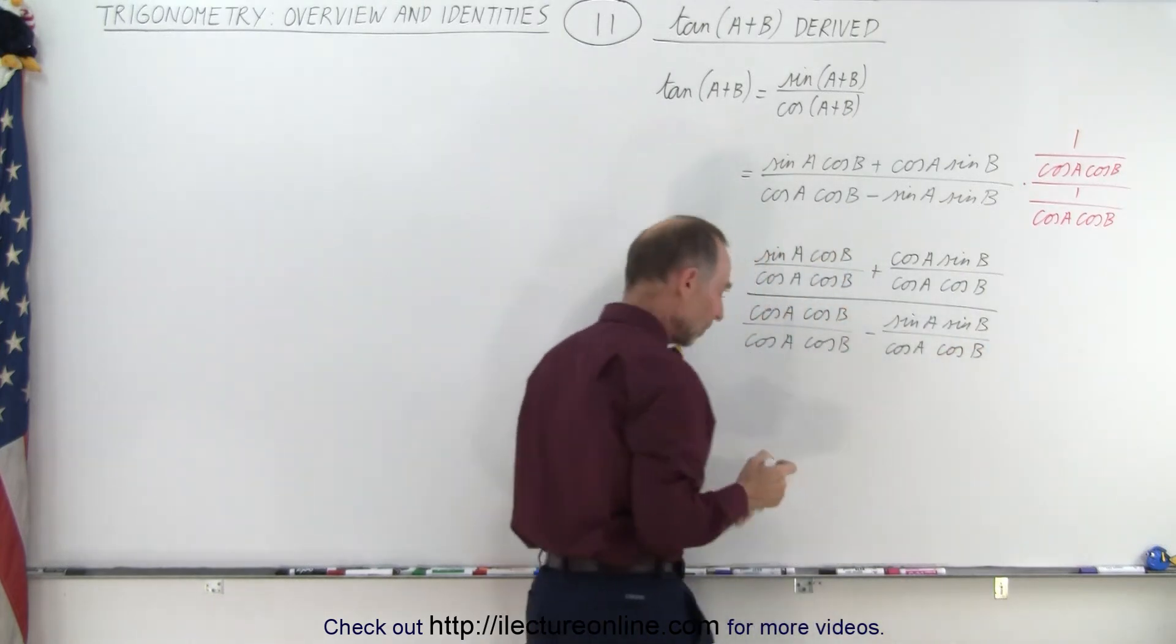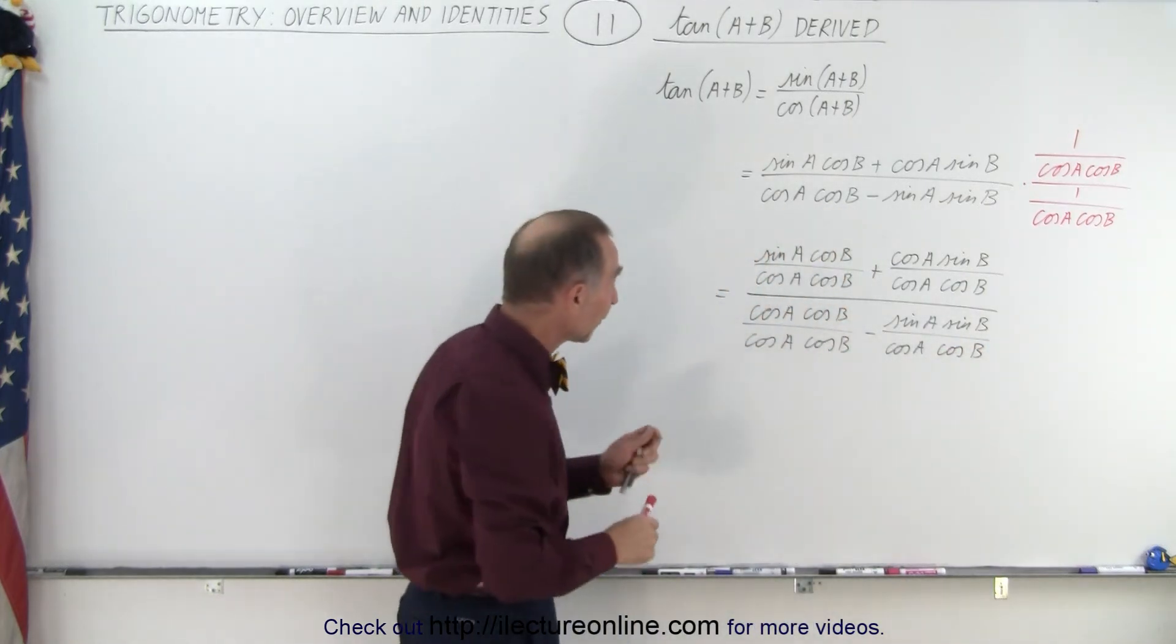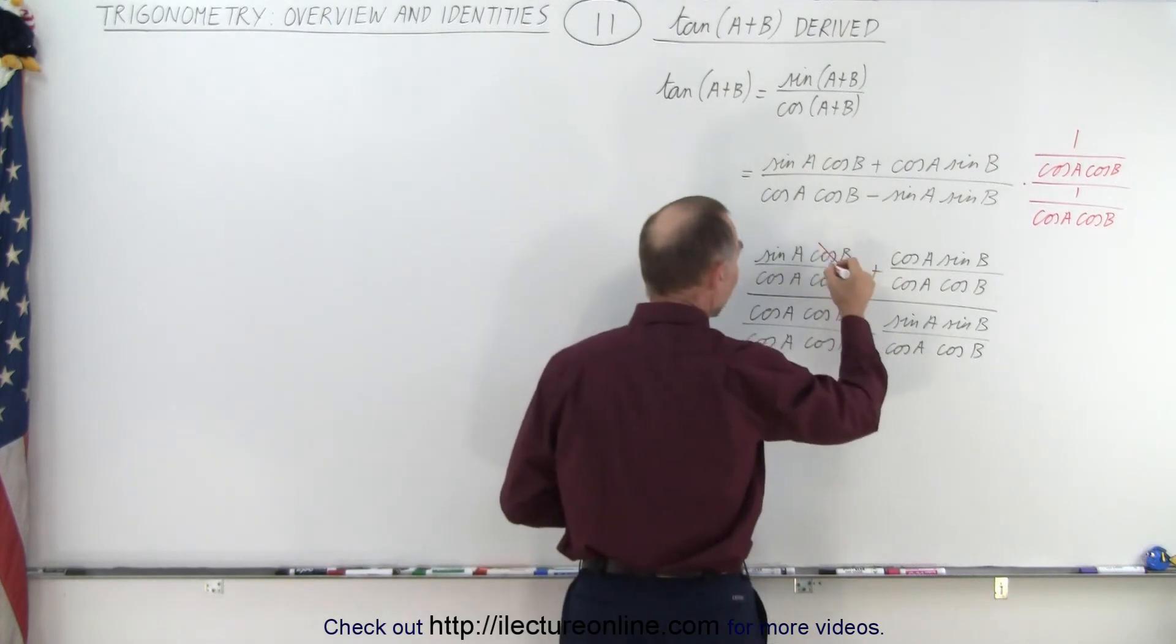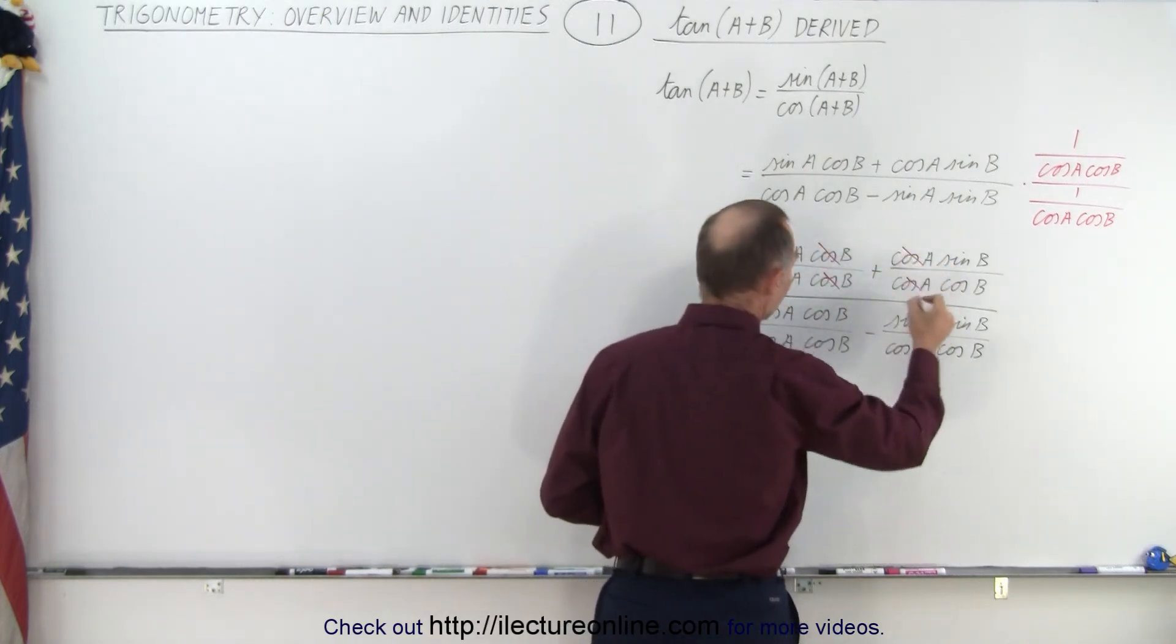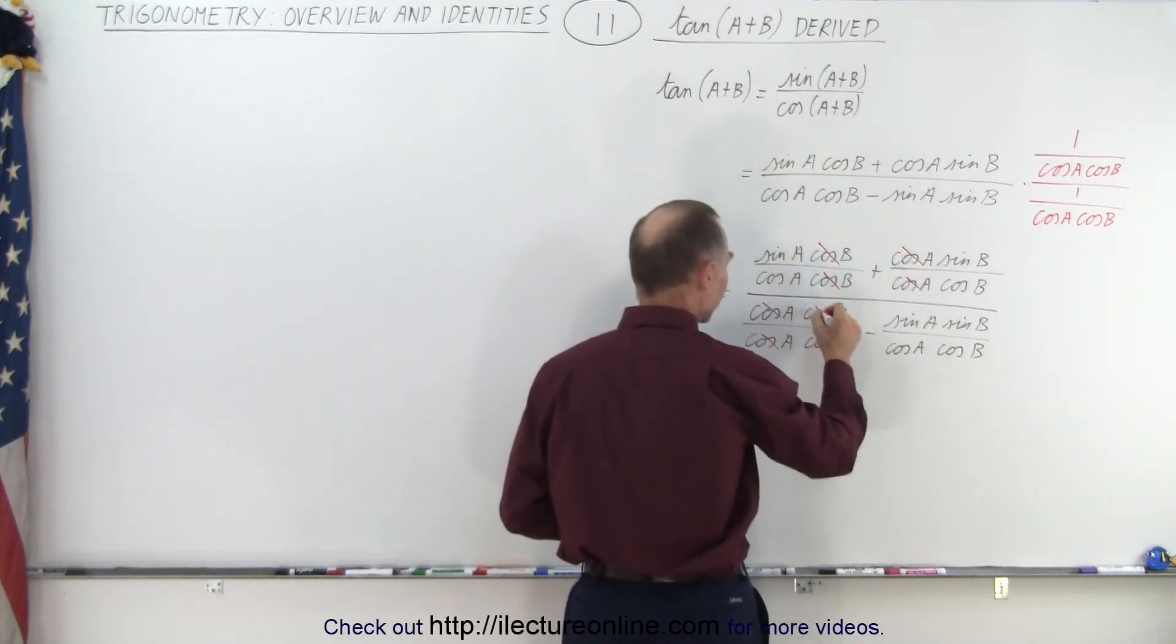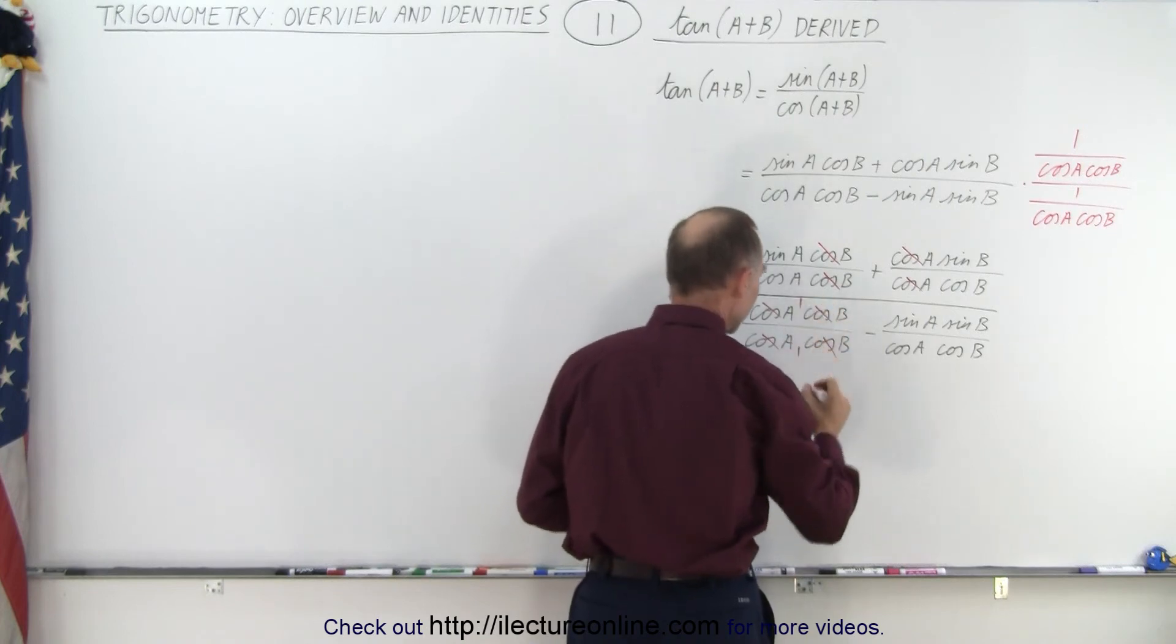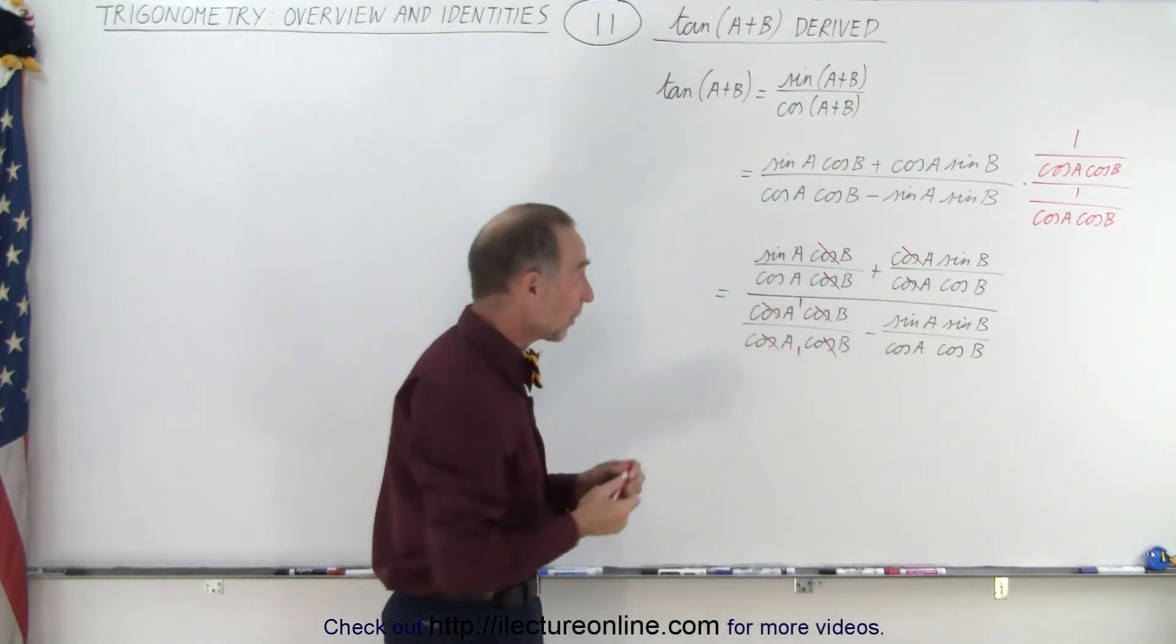And now you begin to see why we did all that. So let's go ahead and simplify this. So the cosine of B's here cancel out. The cosine of A cancels out. Cosine of A cancels out. Cosine of B cancels out. This is one over one. And so now we can write the proper identity.